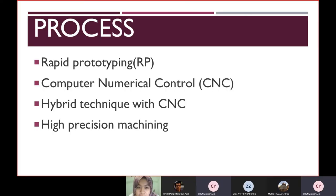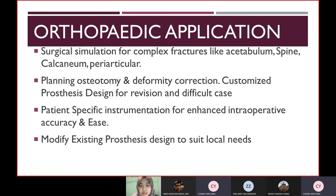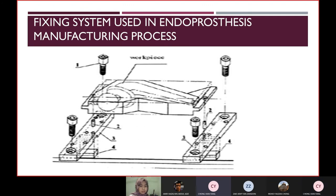First is rapid prototyping, RP, computer numerical control, CNC, hybrid technique with CNC, high position machine. For the RP, it's a group of techniques that is used to quickly fabricate a scale model of a physical part or assembly using three-dimensional computer-aided design CAD data. Fashion-specific instrumentation for enhanced intraoperative accuracy and ease. Modify existing prosthesis design to suit local needs. So this is the picture for the fixation system used in elbow prosthesis manufacturing process.